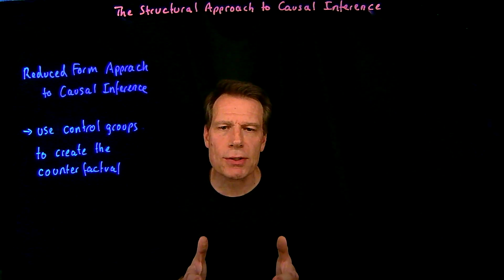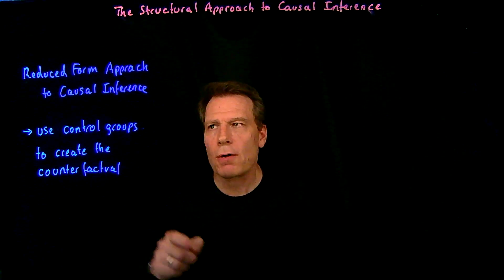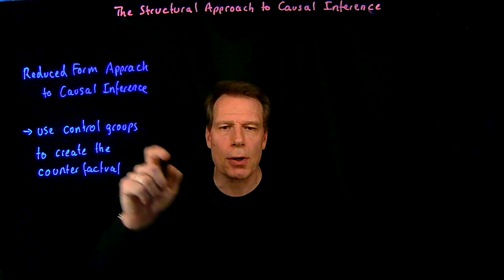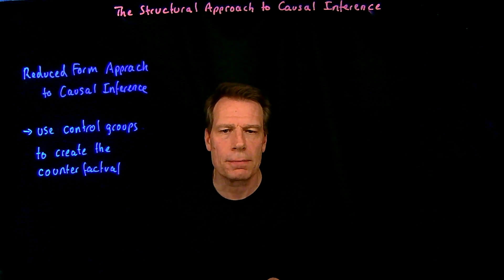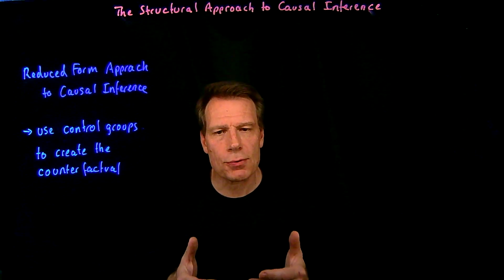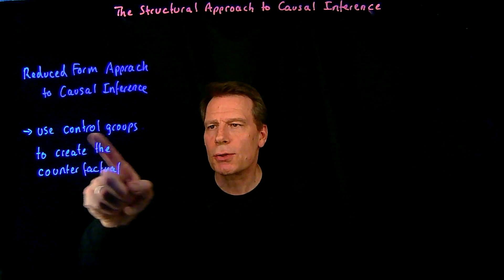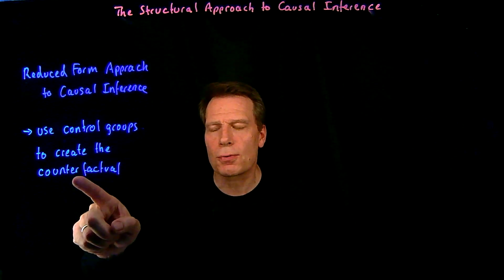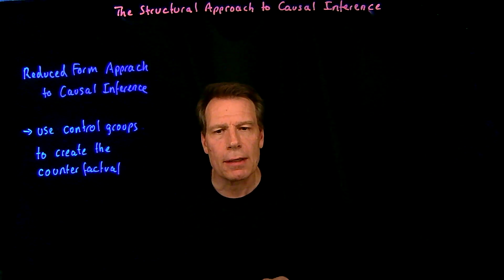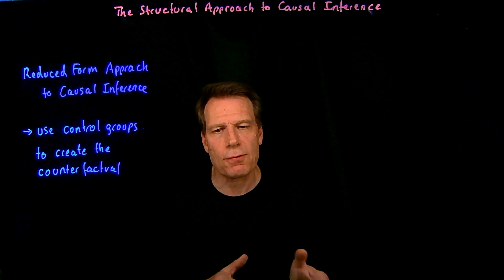The approach to causal inference that we've talked about so far is often called the reduced form approach to causal inference. It's built on a logic of the randomized controlled experiment, and it uses control groups to create the counterfactual and thereby confront the fundamental problem of causal inference.